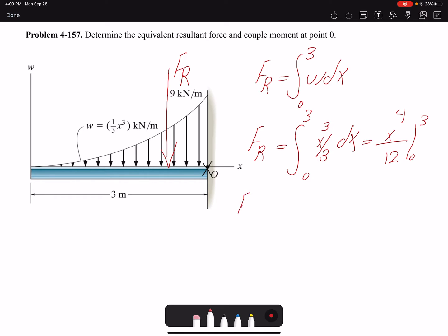If I take the integration, that would be x⁴/(4×3) which is x⁴/12 from 0 to 3. If I plug in the value, I will find FR to be 6.75 kilonewtons.